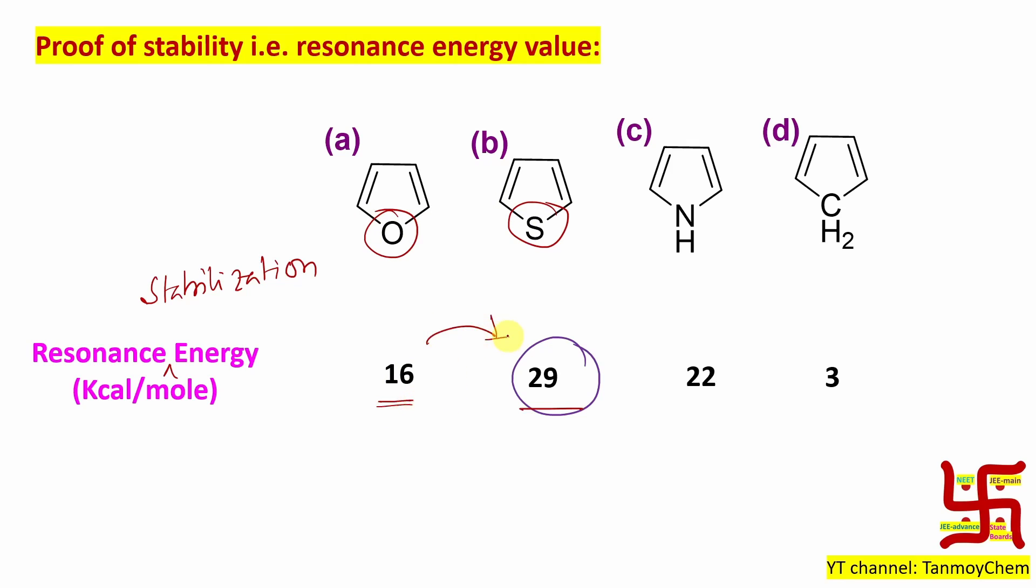Almost you can say this is double. Why? Because of higher size and the participation in vacant d orbital. In the case of pyrrole, you can see some intermediate value.